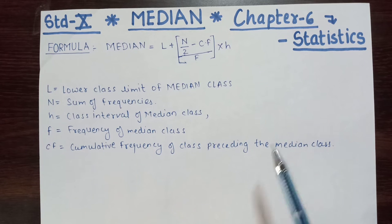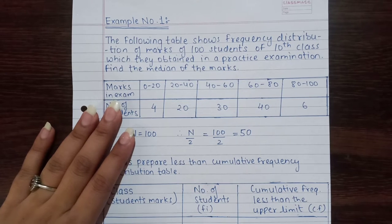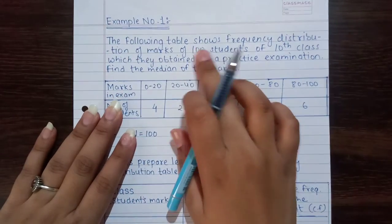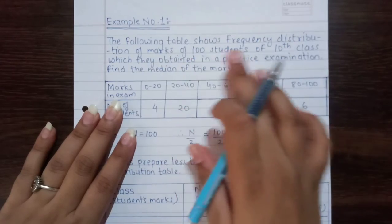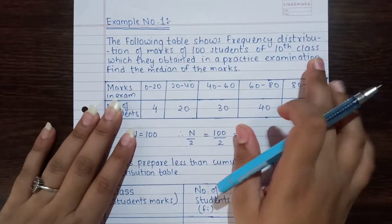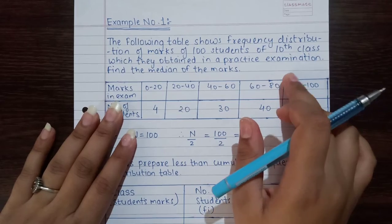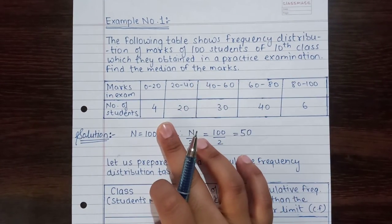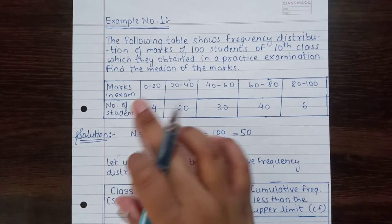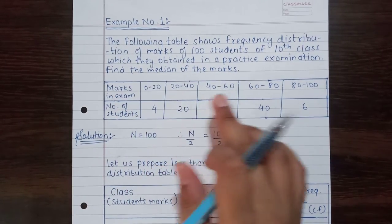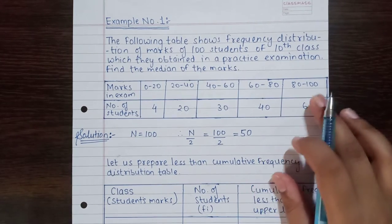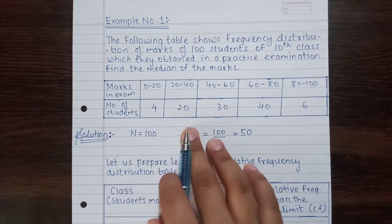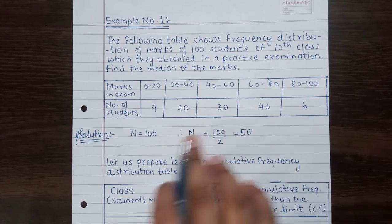Here I have one example for you. The following table shows the frequency distribution of marks of hundred students of tenth class which they obtained in a practice examination. Find the median of marks. The table has marks in exam: 0 to 20, 20 to 40, 40 to 60, 60 to 80, and 80 to 100, with number of students: 4, 20, 30, 40, and 6.